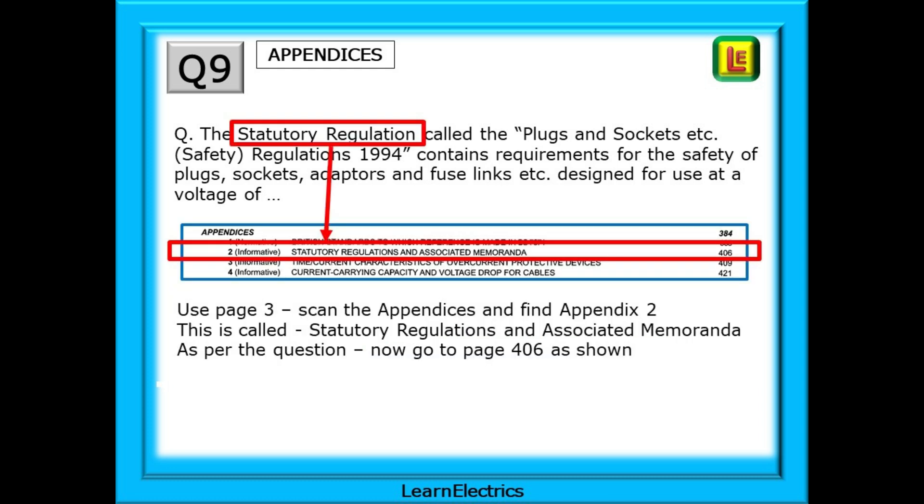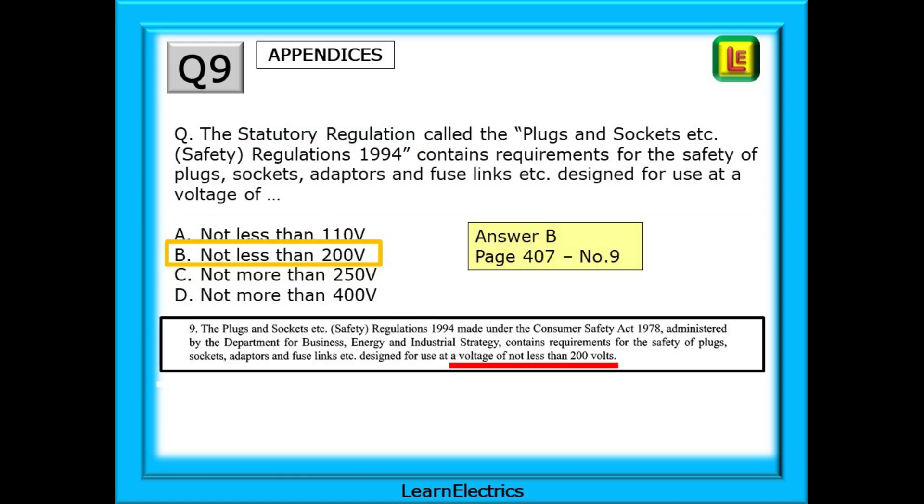Statutory regulation is the key word to start with. Use page 3, scan the appendices section and find Appendix 2. This is called Statutory Regulations and Associated Memoranda.